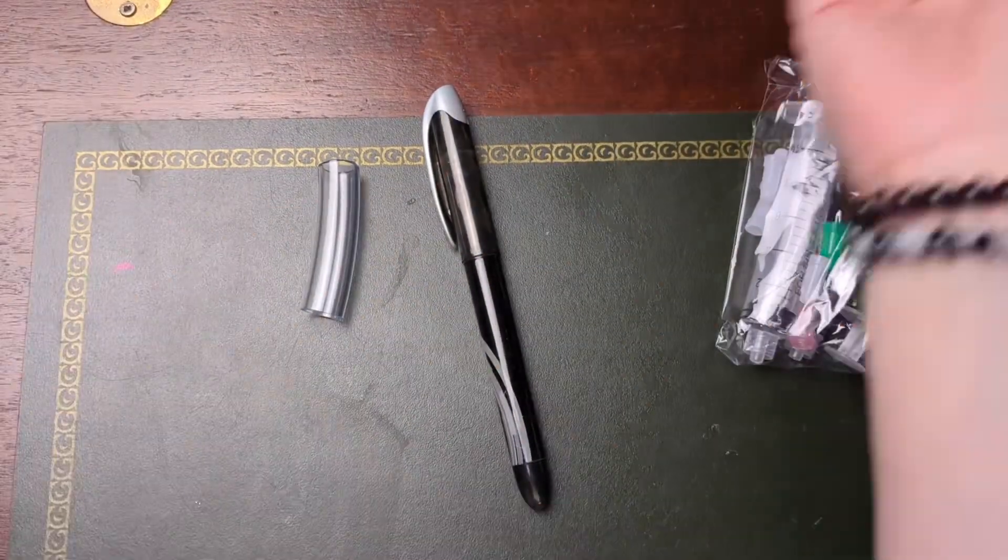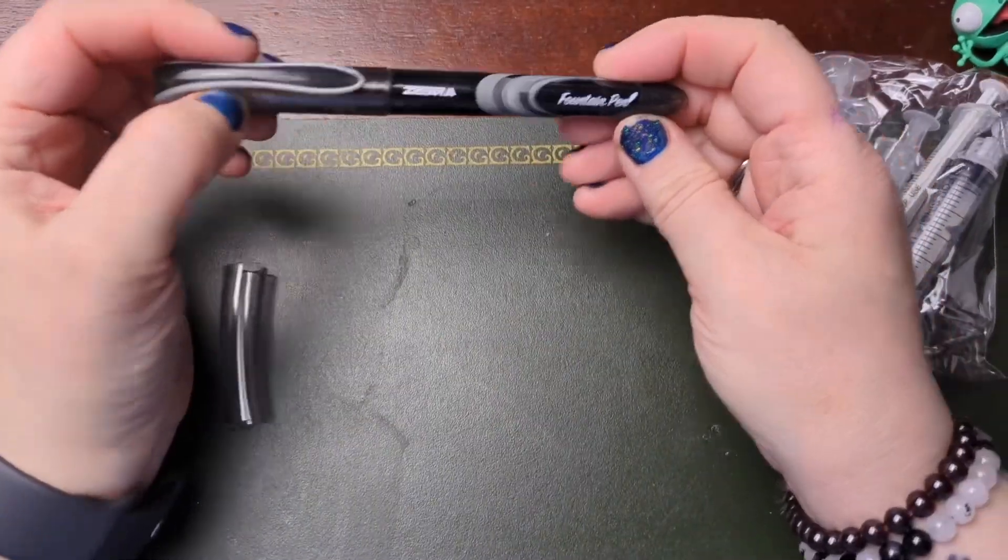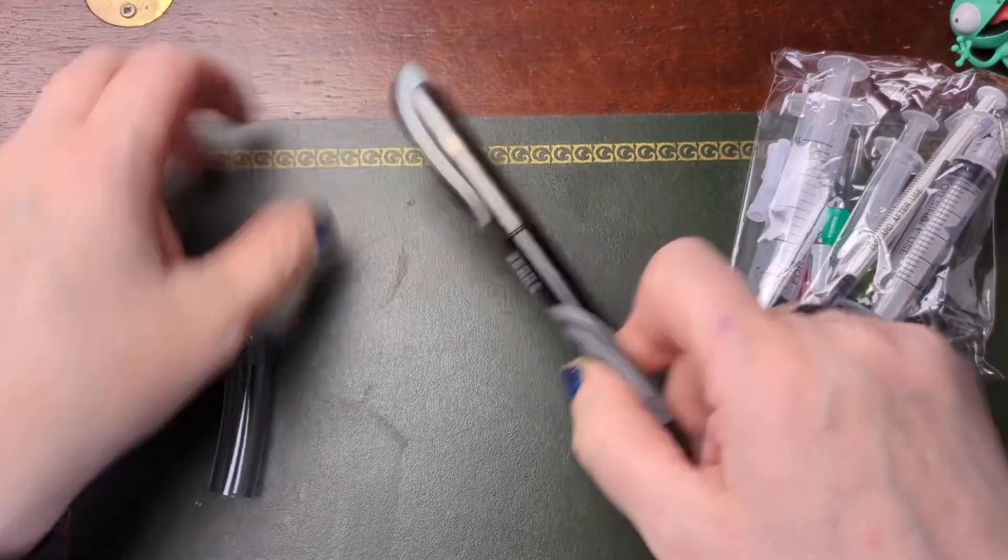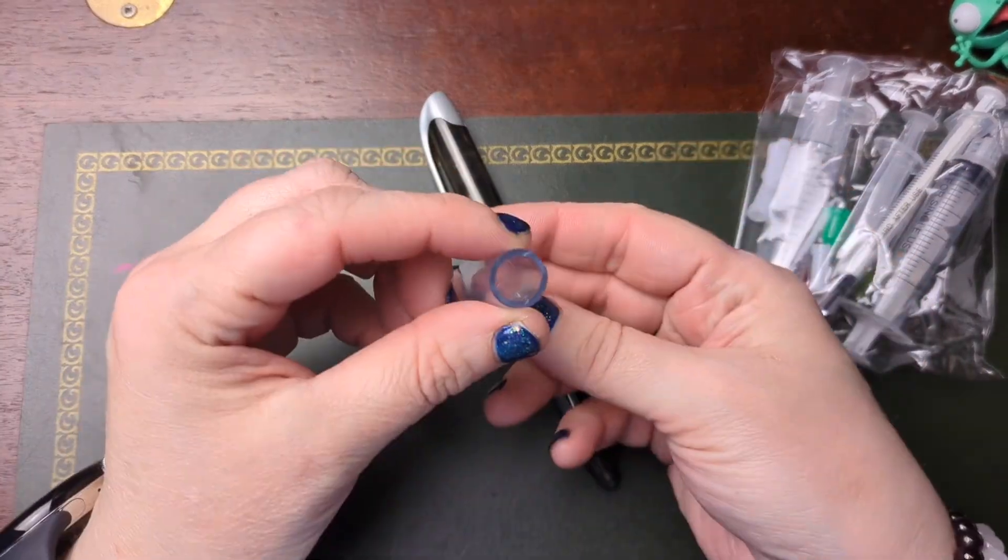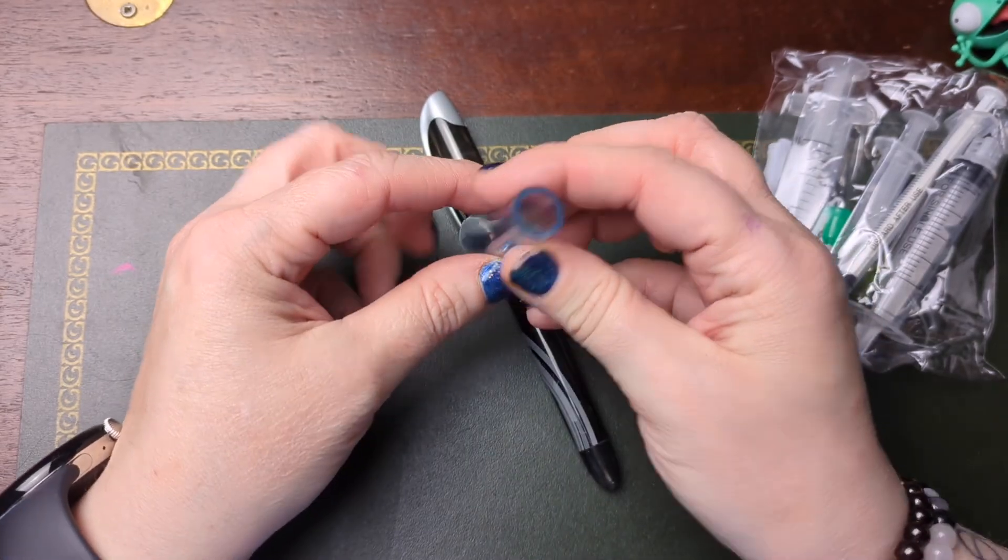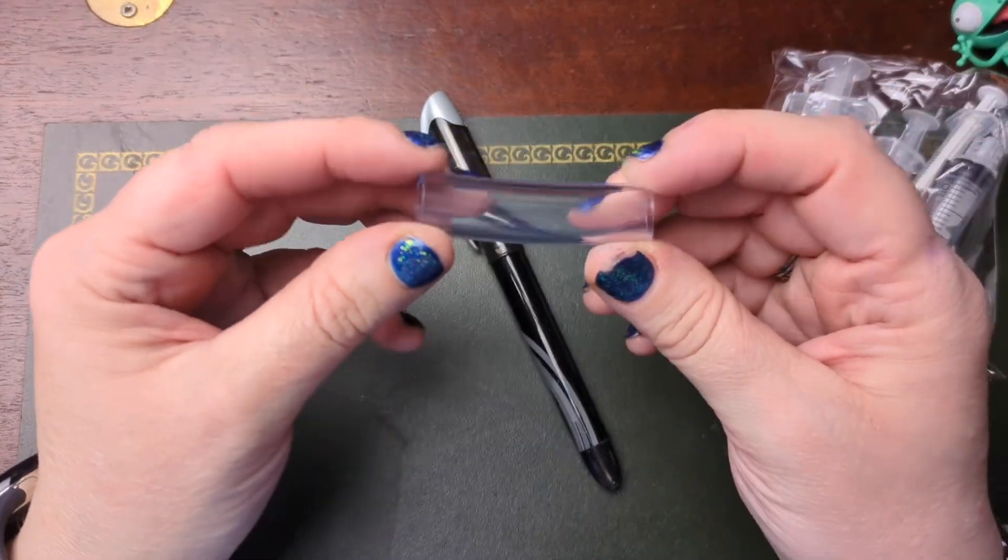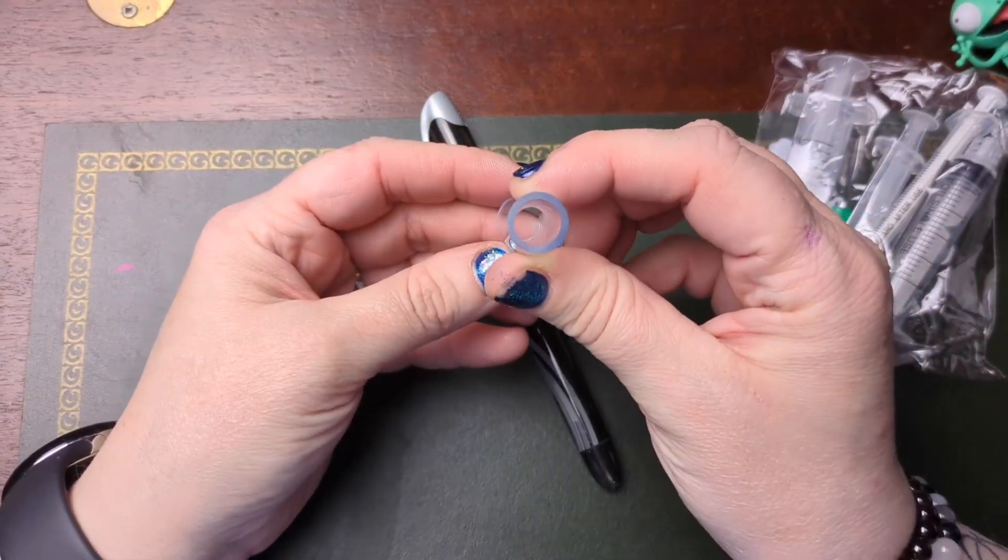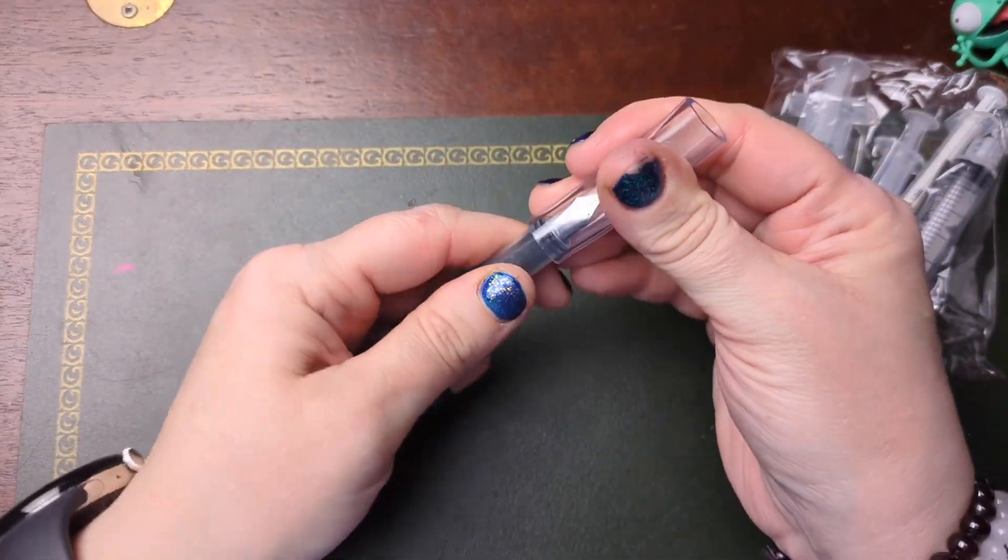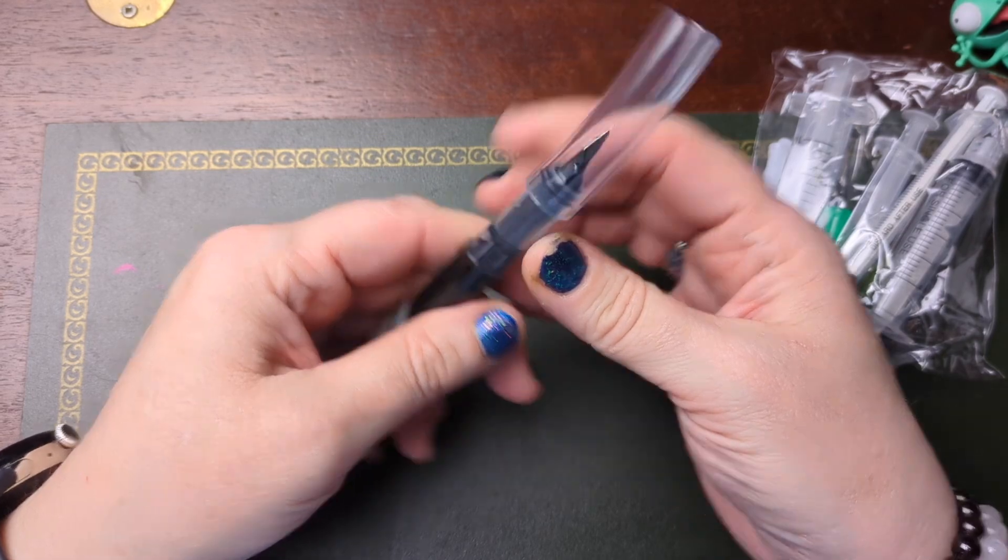So I'm going to attempt today to refill my Zebra disposable fountain pen. In order to do that you need a piece of plastic tubing. I got like a meter of it because I'll use it for my fish tank as well. You need some plastic tubing about the diameter of the pen, tighter the better if you can.